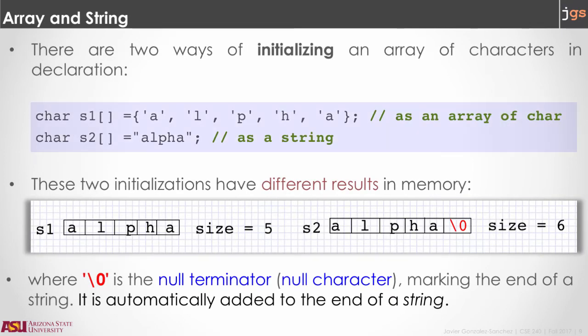Notice that the declaration of s1 and s2 is exactly the same. Both are arrays of characters. However, in the first line, we are adding values to the array as we used to do for arrays in Java, one element in each position. In the second example here, we are initializing the array with a string, and the result is going to be quite different.